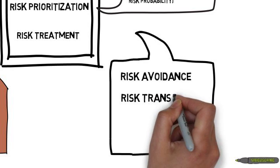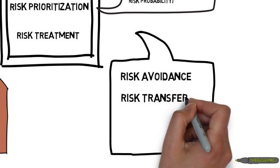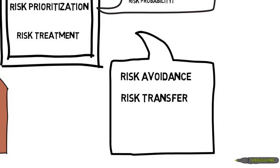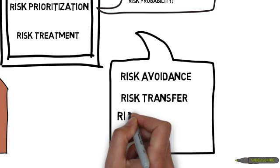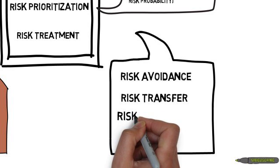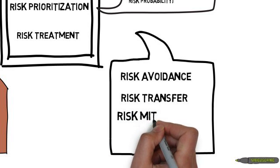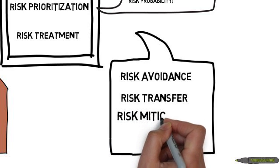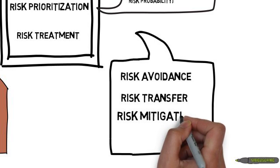Next is risk transfer. If the risk is, for example, the compromise of system security, it is possible to hire a specialized company to perform the security testing and system hardening. The risk is then transferred to the other company.